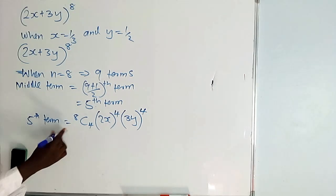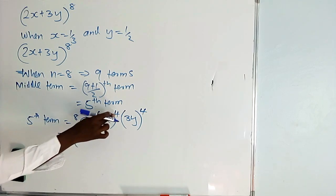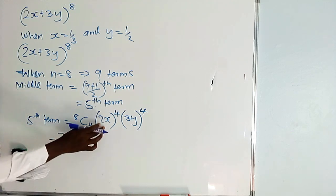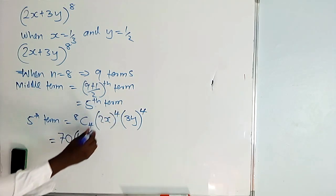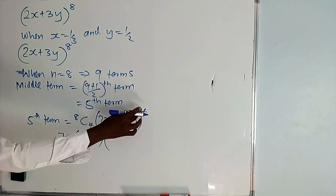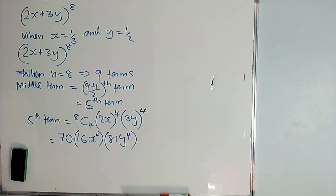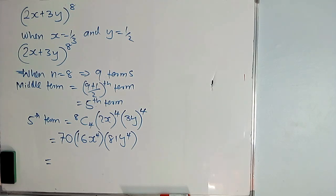What is the coefficient of that fifth term? 70. So the coefficient is 70. Then the first bracket gives us 2x raised to power 4 — this power is for everything inside the bracket. So 2 raised to power 4 gives you 16, and x raised to power 4 gives you x to the 4. Then 3y both raised to power 4: 3 raised to power 4 gives you 81, and y raised to power 4 gives y to the 4. So multiply 70 times 16 times 81.